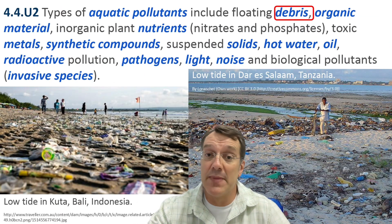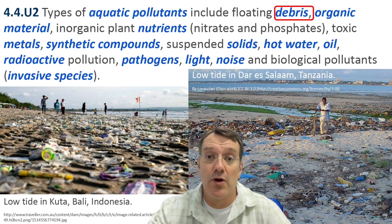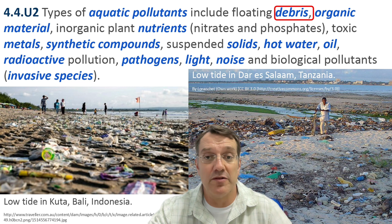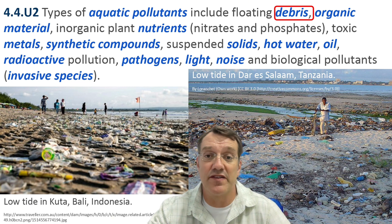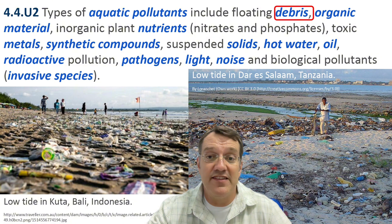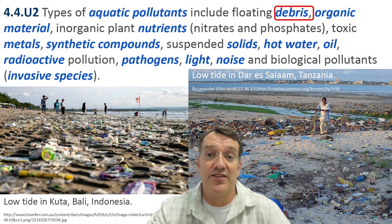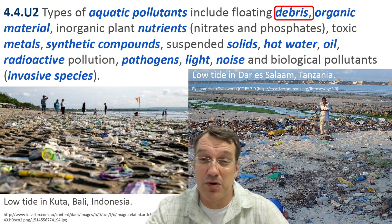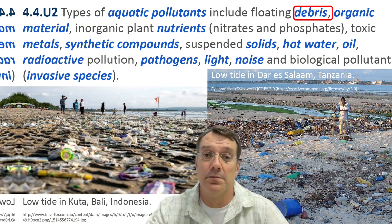Water pollutants come in many forms. One of the most visible is floating debris, particularly plastic waste that accumulates on beaches and in our oceans. These images from beaches in Bali and Tanzania show how widespread this problem has become.